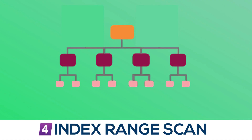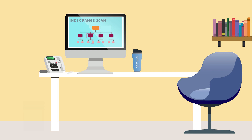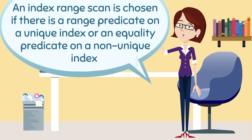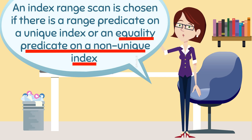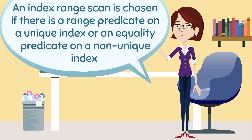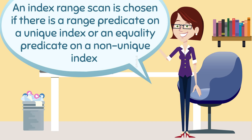Much more common is an index range scan. An index range scan accesses adjacent leaf blocks inside the index and returns the row ID values for the entries in those blocks. It's used if there is an equality predicate on a non-unique column or a non-unique index, and also if there's a range predicate on a unique index. So if you have where the primary key is between 8 and 24, then instead of an index unique scan you'll get an index range scan.